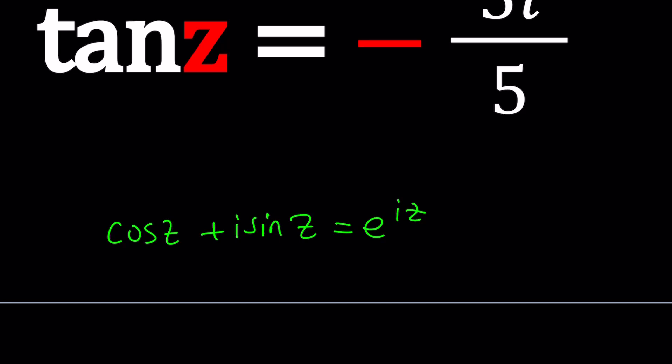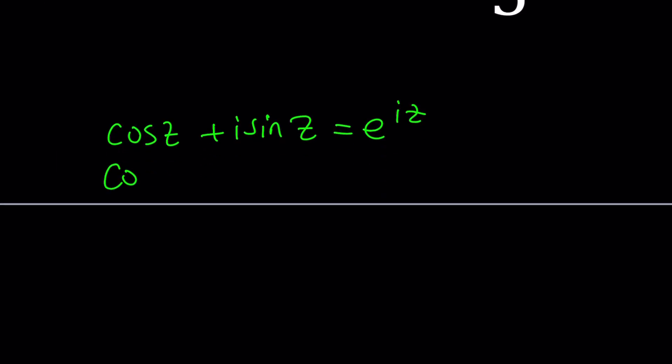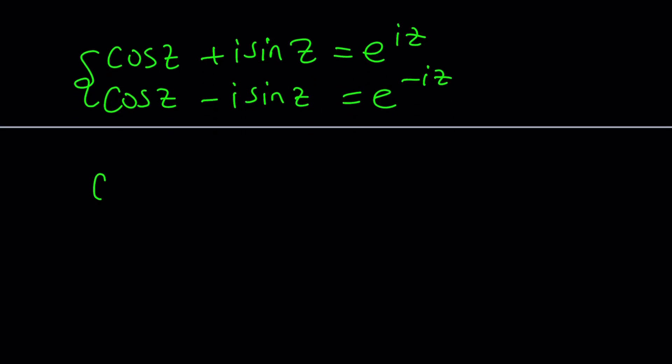Anyways, if you replace z with negative z, you get cosine z minus i sine z equals e to the negative iz. And then by adding these equations and subtracting these equations, you get expressions for cosine and sine, which is nice.